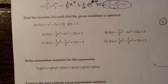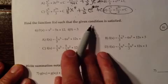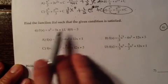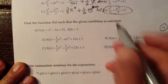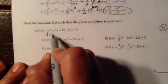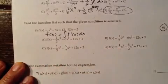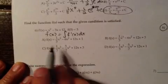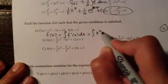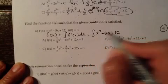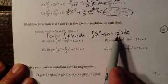Number six asks how do we find the function f of x such that the given condition is satisfied? If you know a derivative, the way you go back to the original function is you have to find the f of x by doing the anti-derivative or integral of f prime of x with respect to x. In this case, we are supposed to integrate x squared minus 5x plus 12 dx.